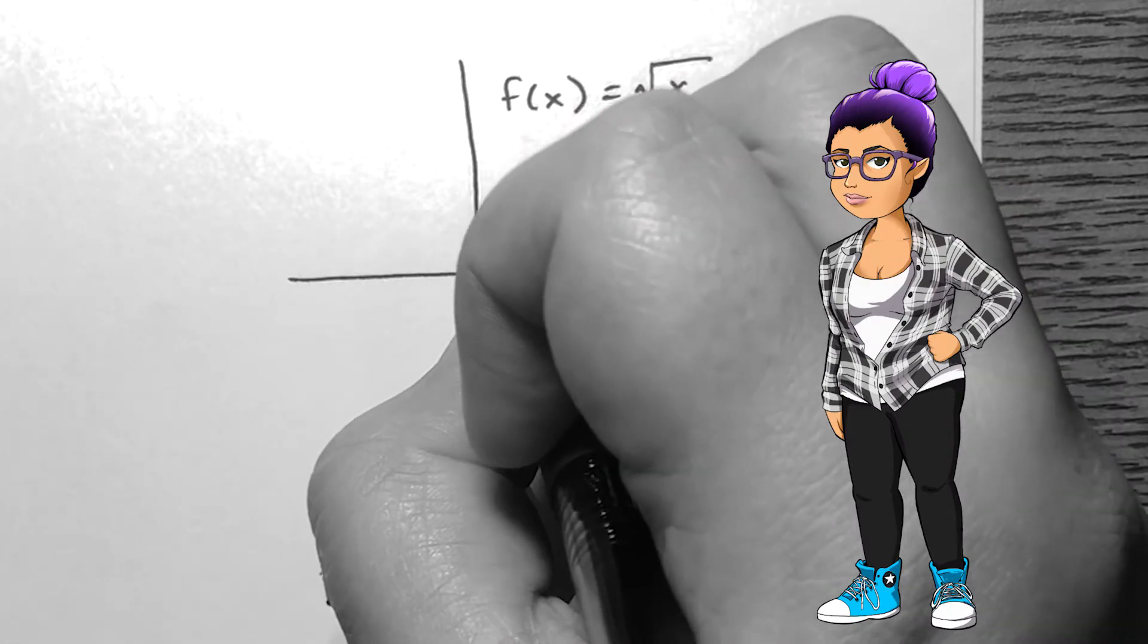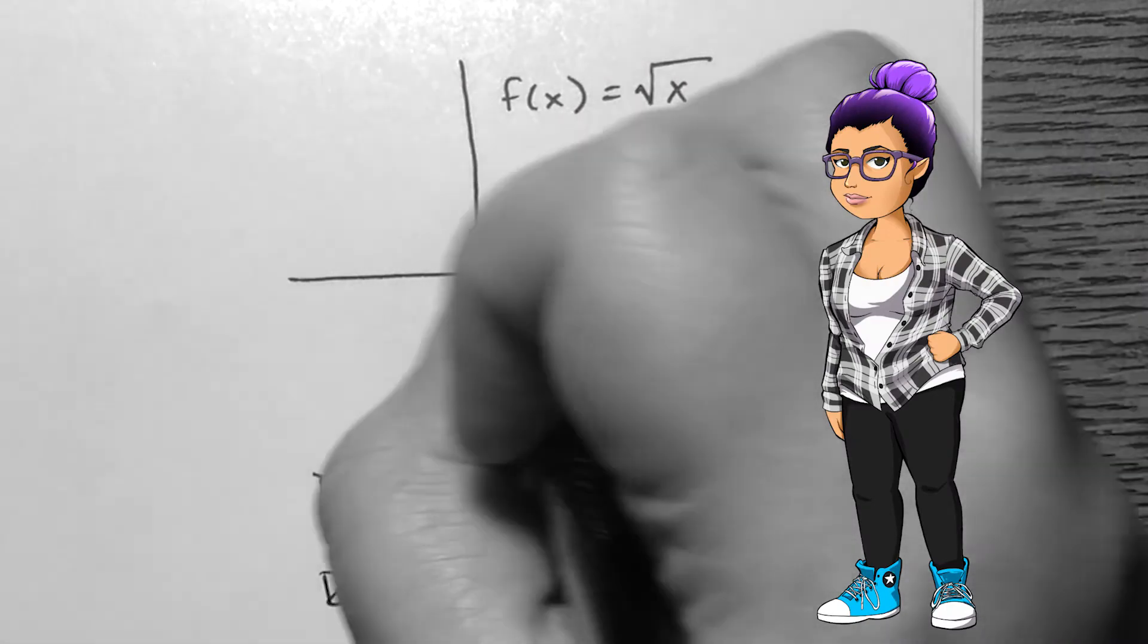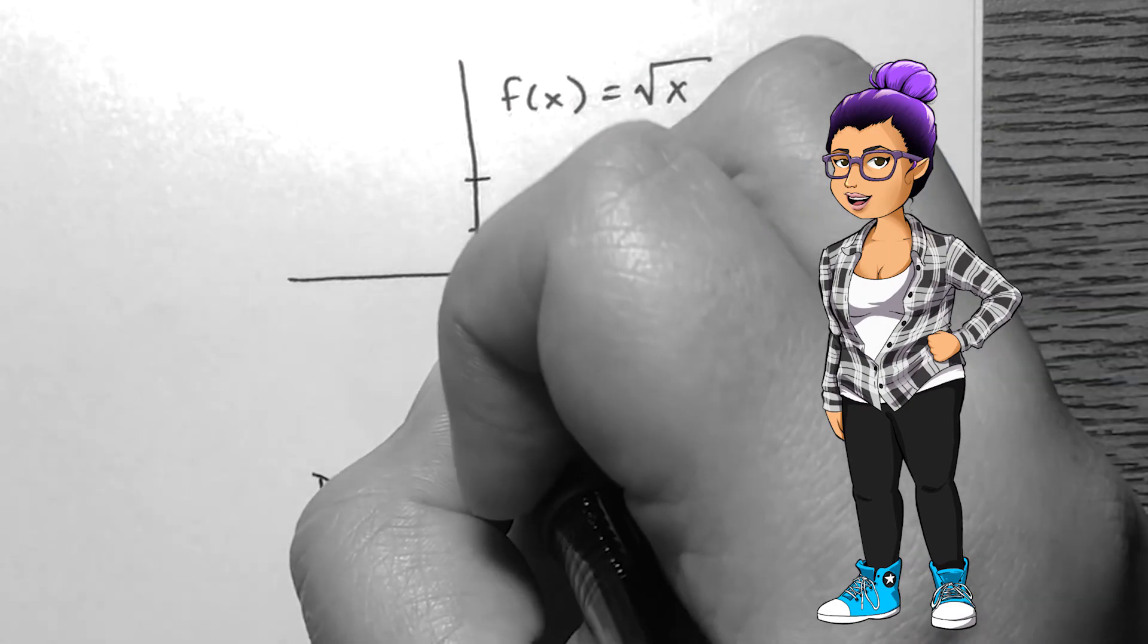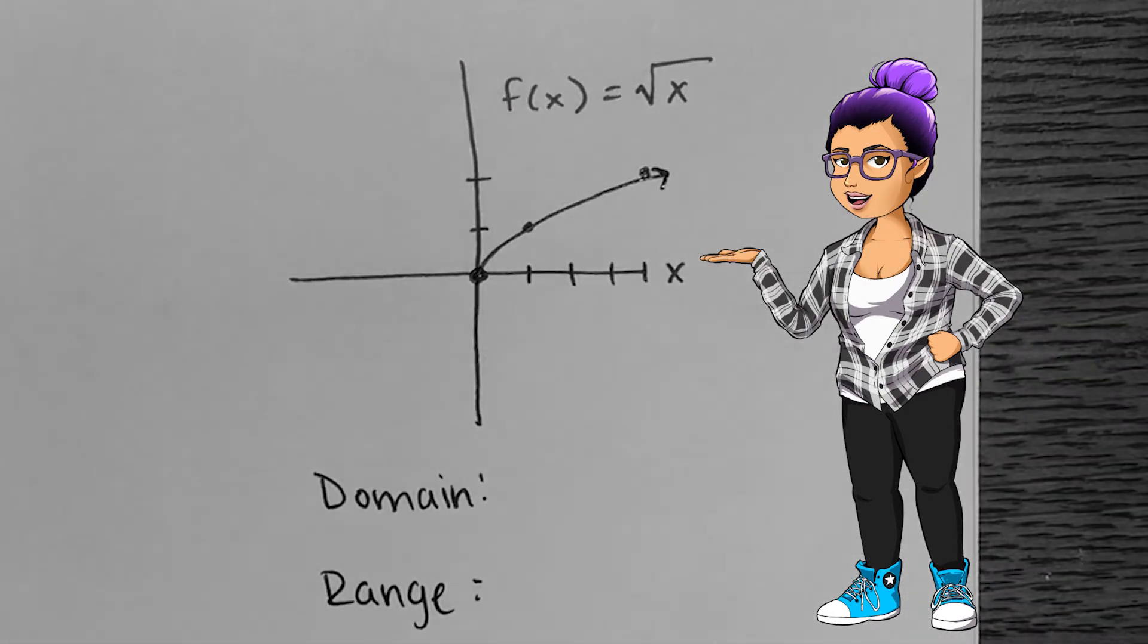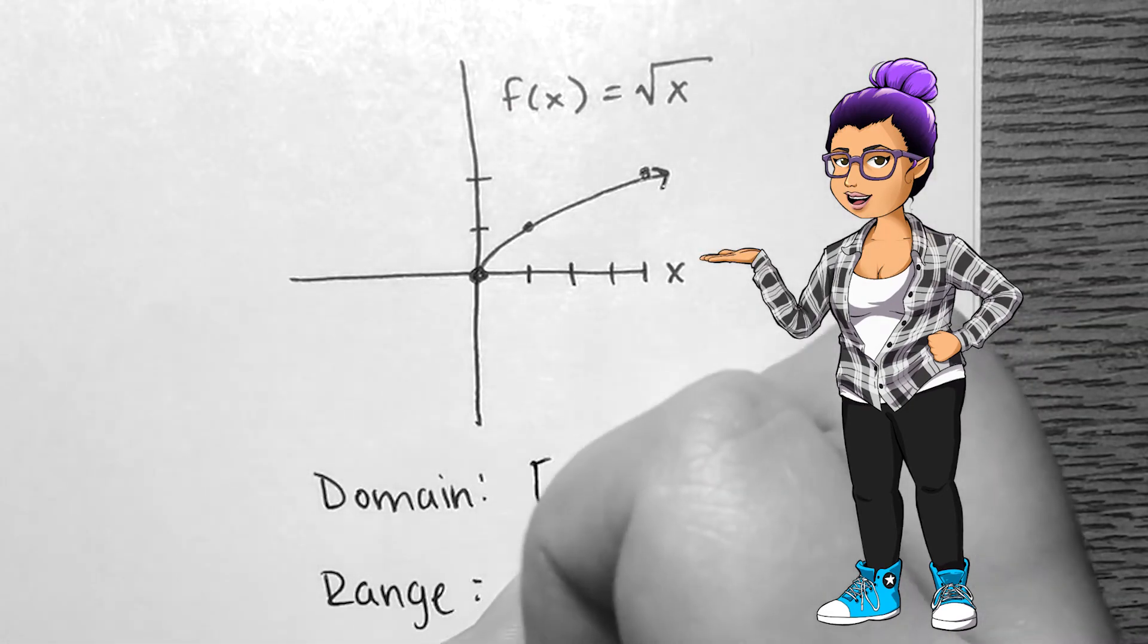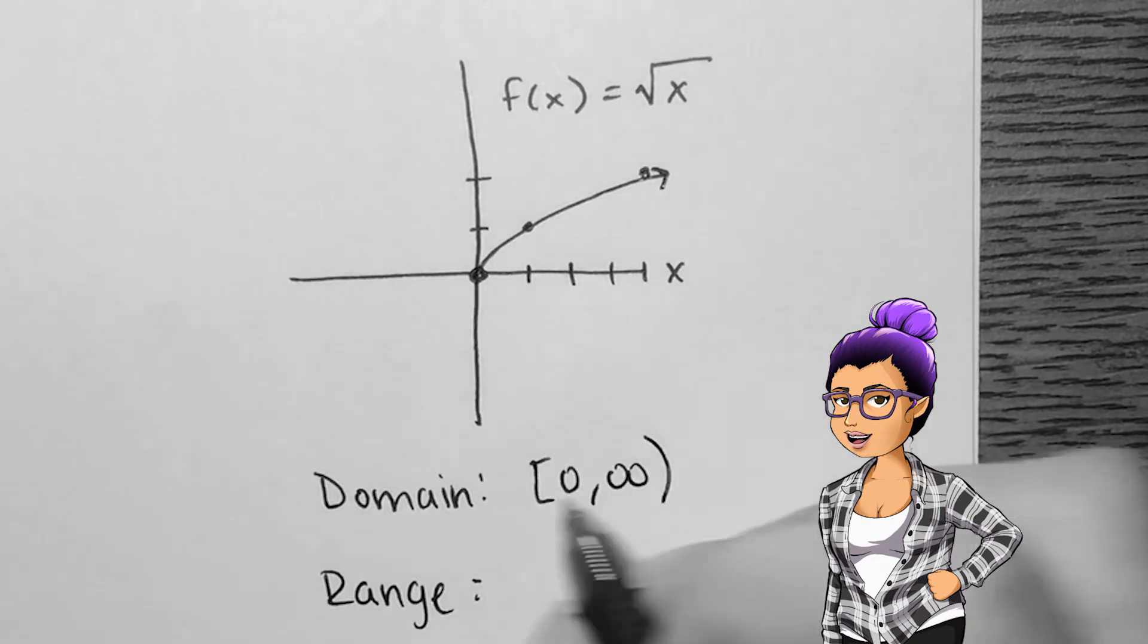The square root function can be written as f of x equals the square root of x. We'll take the square root of any input. The result is half of a parabola laying on its side. The domain is everything greater than or equal to zero, as is the range.